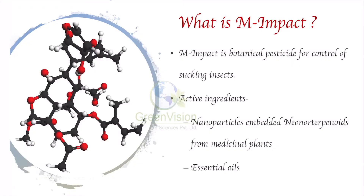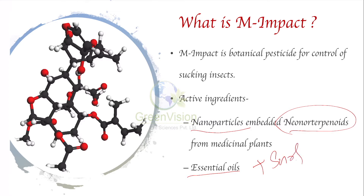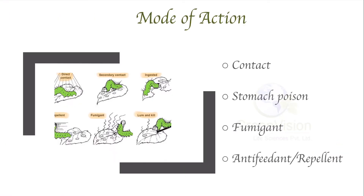That is why we are introducing MM-Pact to control these insects. What is MM-Pact? MM-Pact is a botanical insecticide for control of sucking insects. Its active ingredients are nano-particle embedded neo-terpenoids, which belong to medicinal plants. Apart from that, it contains essential oils as well as a surfactant.